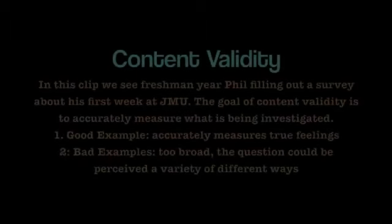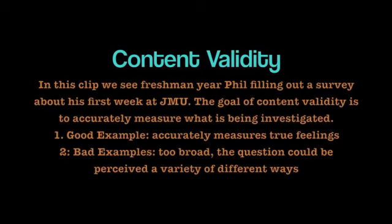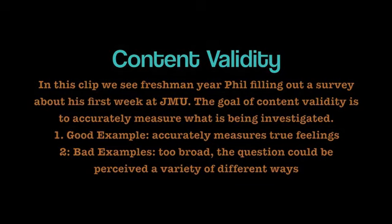In this clip, we see freshman Phil filling out a survey about his first week at JMU. The goal of Content Validity is to accurately measure what is being investigated. The first example is a good example because it accurately measures Phil's true feelings, whereas the second example is a bad example because it is too broad and the questions could be perceived in a variety of different ways.